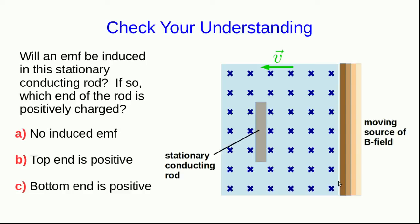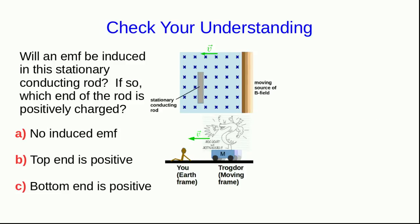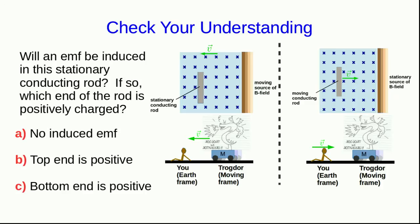I hope that the past video lecture has helped you with this, because what you hopefully realize is that anything that's true for the stationary rod and the moving source of B-field must be exactly true for the conducting rod moving and the source of the B-field stationary. So we need to think about you and Trogdor again. And if Trogdor is moving along with the source of the magnetic field, or equivalently moving along with the field, then from his point of view,